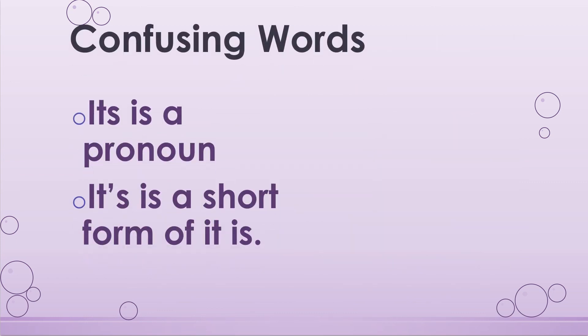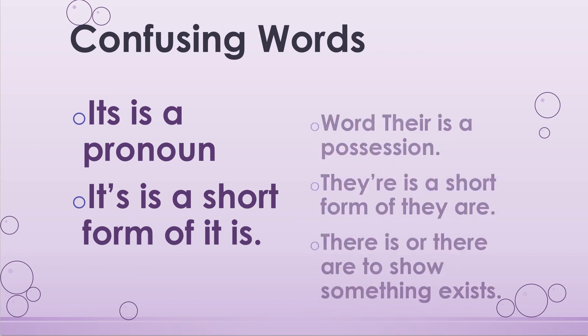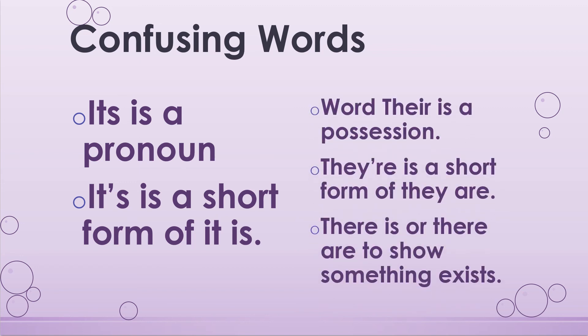Be careful with confusing words. 'It's' with an apostrophe is a pronoun and a short form of 'it is'. 'Their' shows possession, 'they're' is a short form of 'they are', and 'there' is used to show something exists. You should be very careful: 'its' without an apostrophe and 'their' without an apostrophe are possessive pronouns.